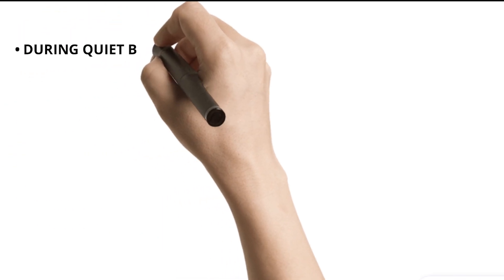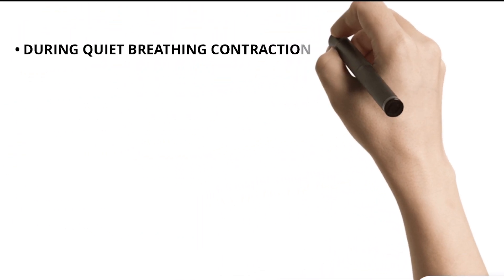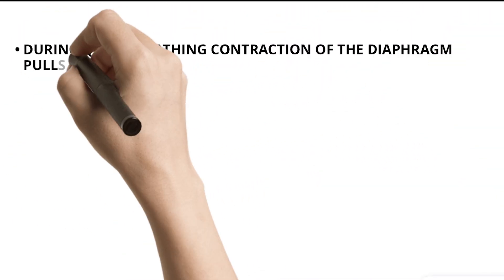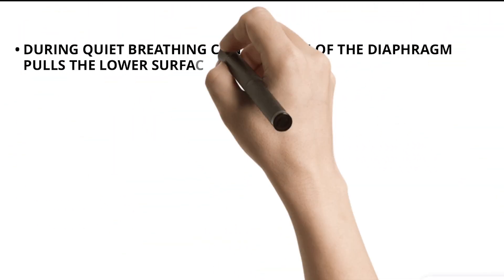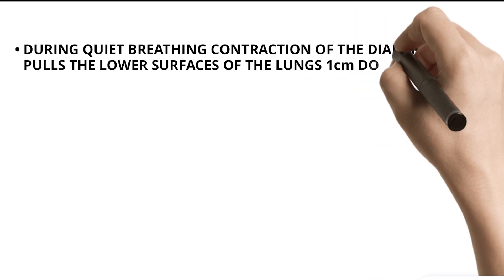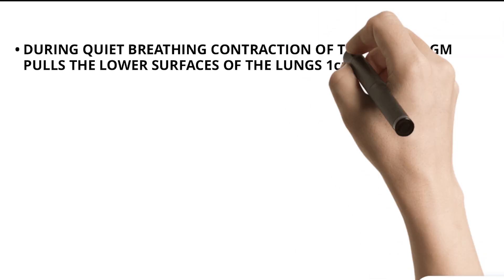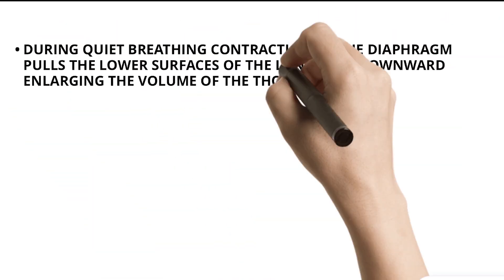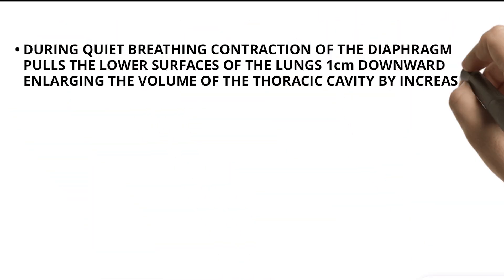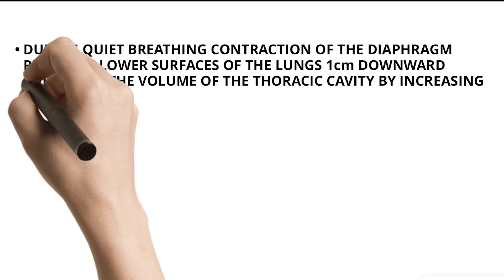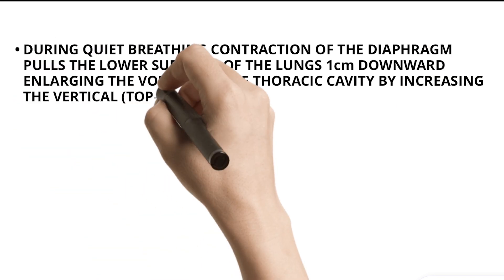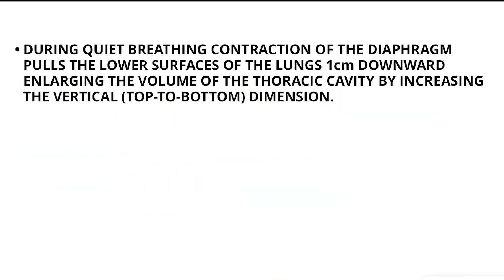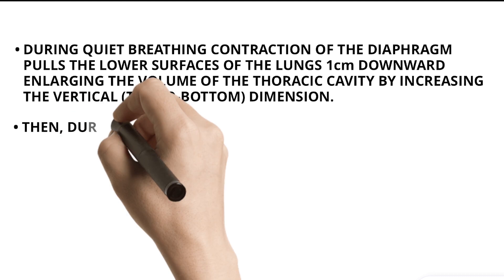During quiet breathing, contraction of the diaphragm pulls the lower surfaces of the lungs one centimeter downward, enlarging the volume of the thoracic cavity by increasing the vertical top-to-bottom dimension.